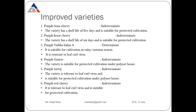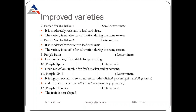Punjab Red Cherry is again indeterminate, tolerant to leaf curl virus, and suitable for protected cultivation. Punjab Varkha Bahar 1 is again suitable for the rainy season, resistant to leaf curl virus, and is semi-determinate in growth habit. Punjab Varkha Bahar 2 is suitable for cultivation during rainy season, moderately resistant to leaf curl virus, and has determinate growth habit.